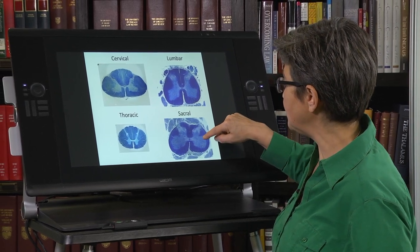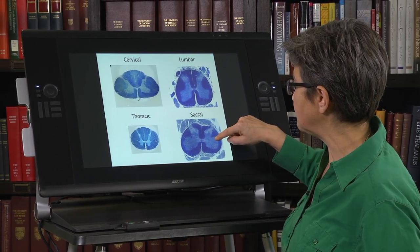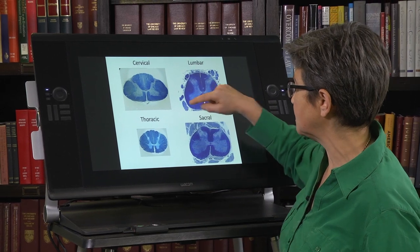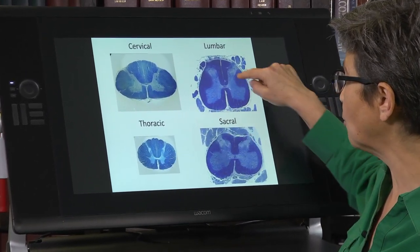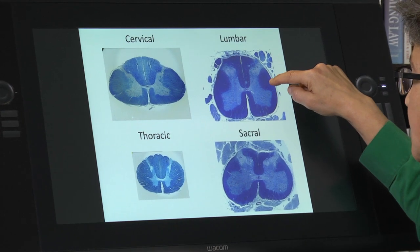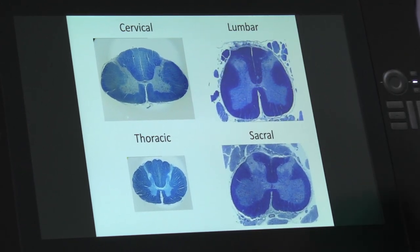So these are sympathetic preganglionics. There are not sympathetic preganglionics in either the lumbar cord or the cervical cord.